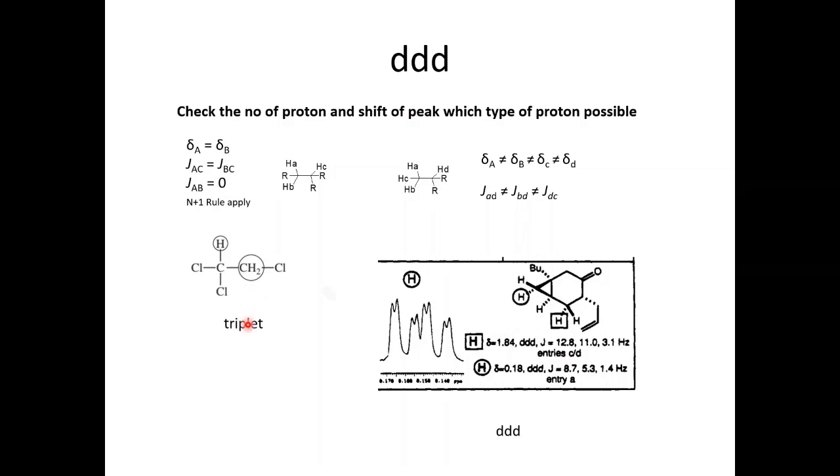This is a typical case of triplet when these two protons have same J value towards this proton. The chemical shift of these two protons is also same and J value towards this proton is also same. But what happens when the chemical shifts are different and J value is also different?